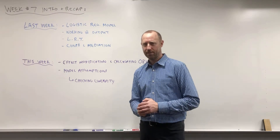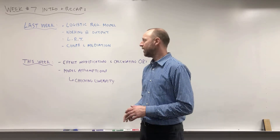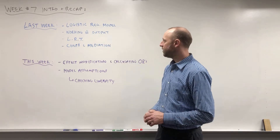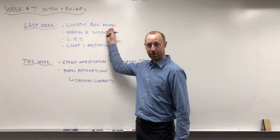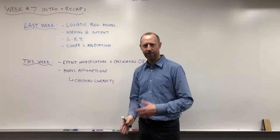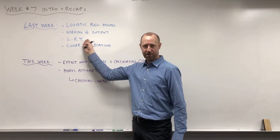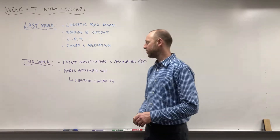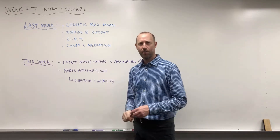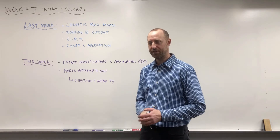We've made it to week seven in the course. Let's quickly remind ourselves of what we've been talking about in the previous week or two. We've been looking at logistic regression — getting model output, working with it, calculating odds ratios, estimating probabilities. We also looked at the likelihood ratio test for comparing nested models, and conceptually and numerically the ideas of confounding and mediation, working towards building a model to estimate the effect that smoking has on the risk of low birth weight.